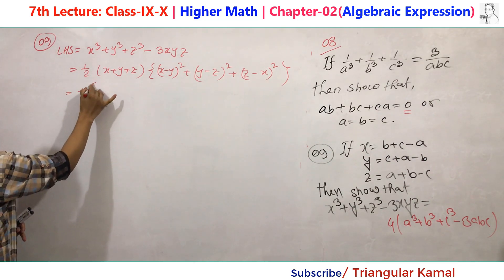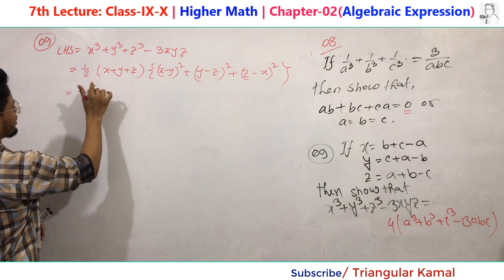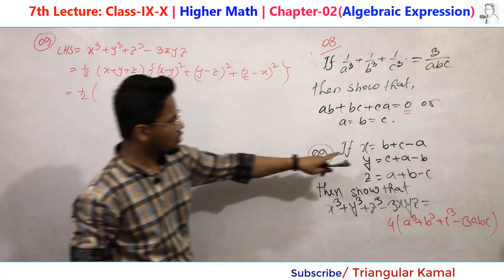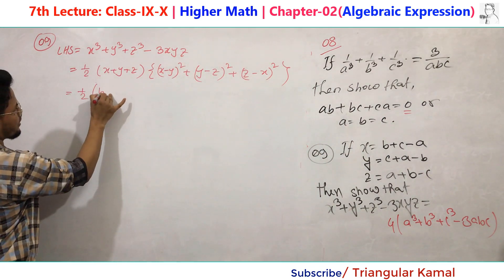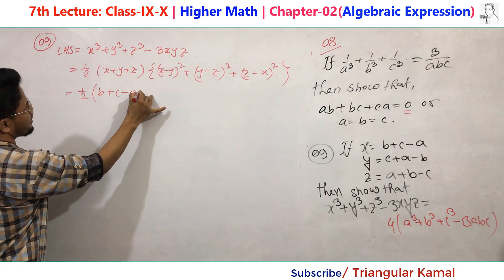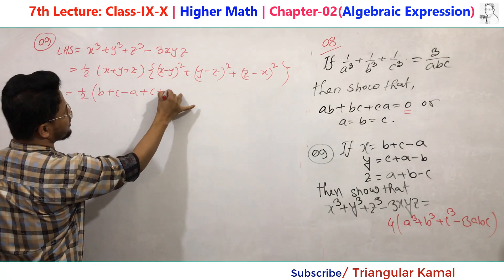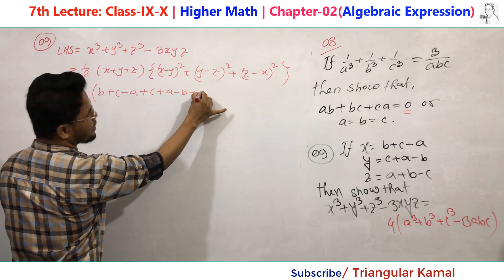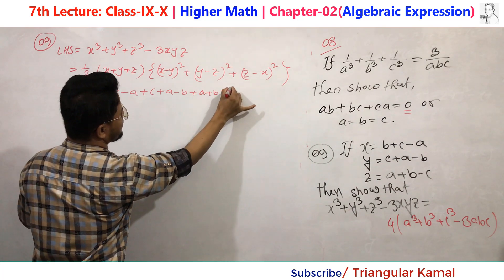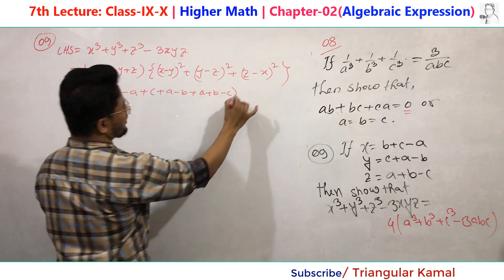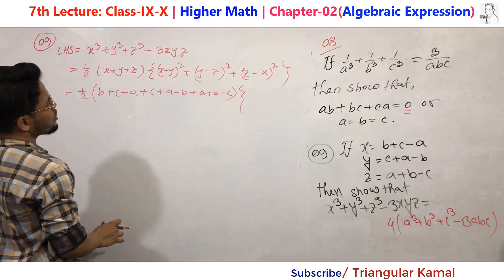This is now one-half. Now apply the values of x, y, and z. The value of x is (b + c - a), the value of y is (c + a - b), and the value of z is (a + b - c). So x + y + z becomes: (b + c - a) + (c + a - b) + (a + b - c).